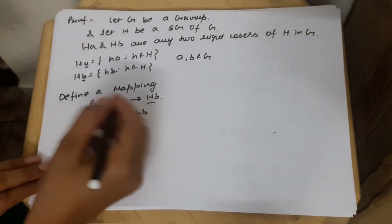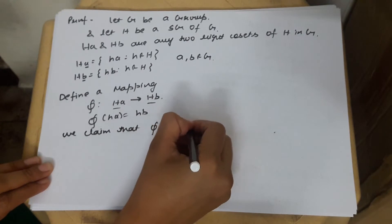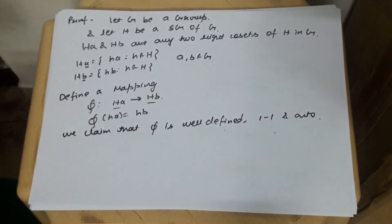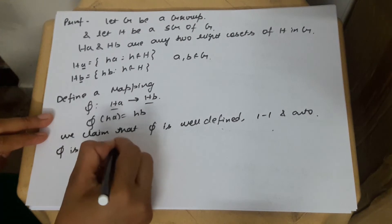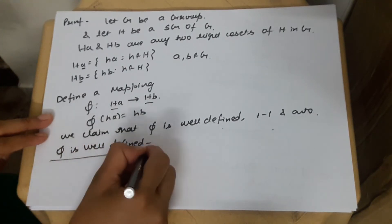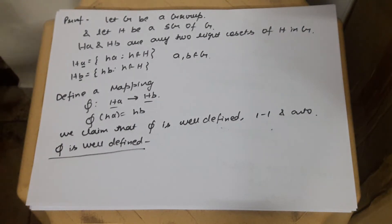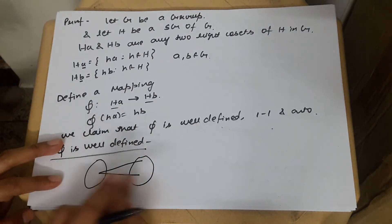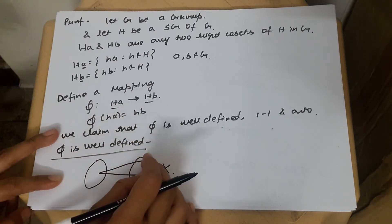We claim that phi is well-defined, one-one, and onto. First, I will prove phi is well-defined. The meaning of well-defined is: one element cannot map to two different images. If two elements are the same, then their images should also be the same. That is what we are going to prove.